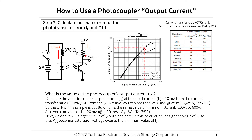Step 2: Calculate the output current of the phototransistor from IF and CTR. The photocoupler's output current IC is calculated using the current transfer ratio: CTR = IC / IF. From the IC–IF curve, at IF = 5 mA, VCE = 5V, TA = 25°C, IC = 10 mA, giving a CTR of 200%, matching the minimum VL rank (200%–600%). At IF = 10 mA, VCE = 5V, TA = 25°C, IC = 20 mA. Next, derive RL using the value of IC obtained, designing RL so that VCE reaches saturation voltage even at the minimum value of IC.